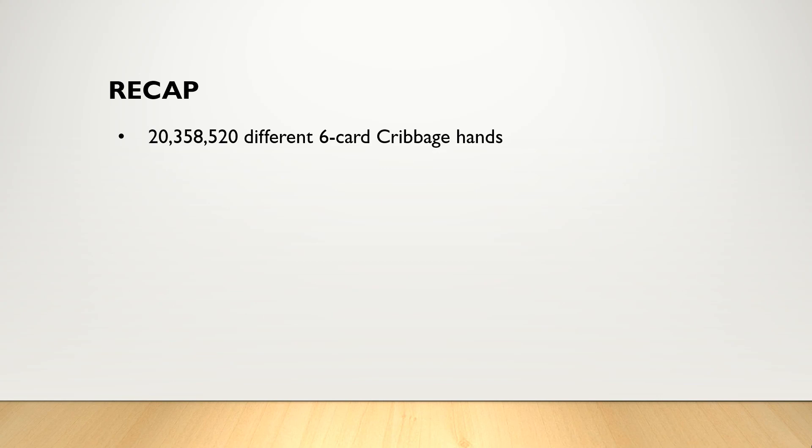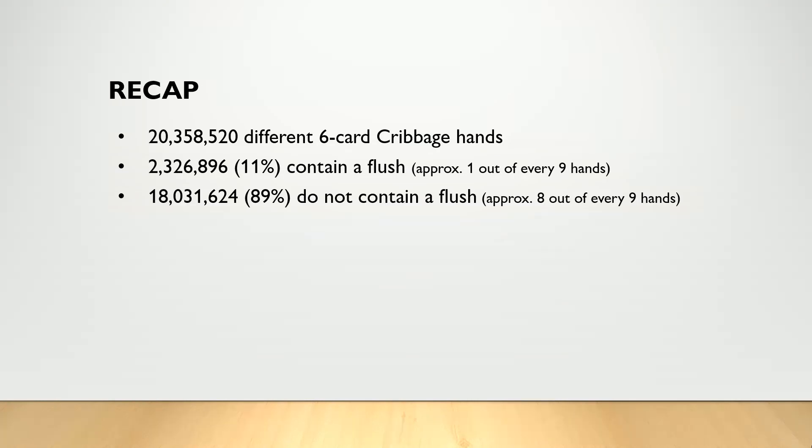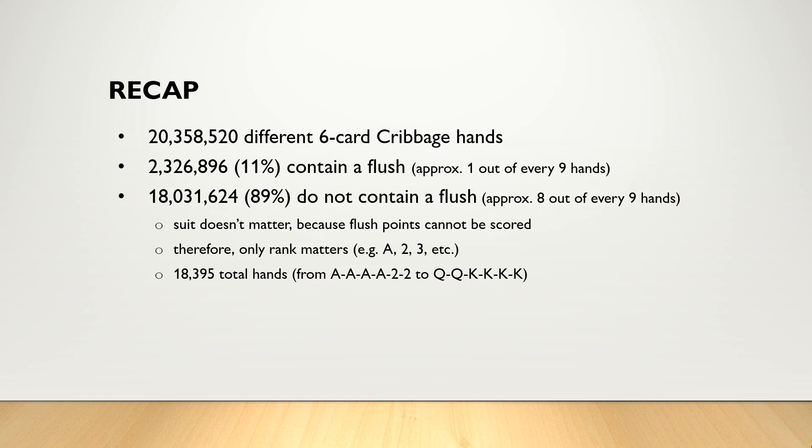So to recap, there are 20 million different six-card cribbage hands. Of those, approximately one out of every nine hands will contain a flush, 11%. 89% of the total possible six-card cribbage hands do not contain a flush. So that's approximately eight out of every nine hands. Of these 18 million hands, suit doesn't matter because flush points cannot be scored. Therefore, only rank matters. For example, ace, two, three, four, and so on. And that leaves us with 18,395 unsuited hands from four aces and two twos to two queens and four kings.